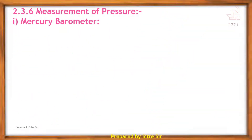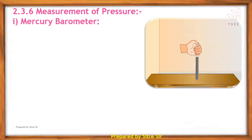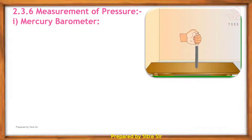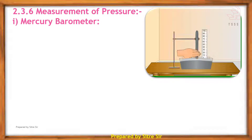The next point is measurement of pressure. The first instrument is the mercury barometer. In this video, mercury is filled inside a test tube, inverted, and immersed in a bigger dish. The level of mercury in the tube then lowers.